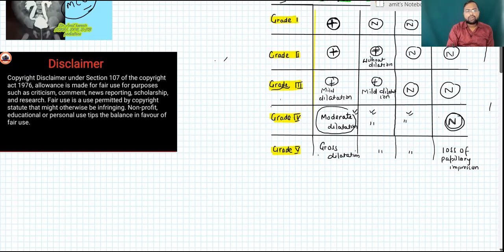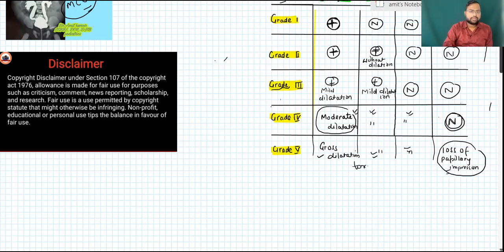In Grade 5, there is gross dilatation of the ureter with tortuosity, along with dilatation of the renal pelvis and calyxes, and there is loss of papillary impression. This is the simplest way to remember the grading, which is also asked in examinations.